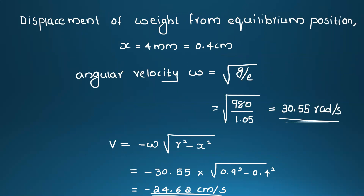For velocity at 4 mm below equilibrium: x equals 4 mm equals 0.4 cm. Amplitude r equals 0.9 cm. Angular velocity ω equals square root of g divided by static deflection, equal to square root of 980 divided by 1.05, equal to 13.55 radian per second. Velocity equals minus ω times square root of r² minus x² equals minus 13.55 times square root of 0.9² minus 0.4² equals minus 24.62 centimeter per second.